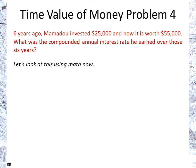Now I'm going to continue by showing you the math for those of you looking at financial math questions. We start with the equation and rearrange it: the future value over the present value equals (1 + r) to the power of n.